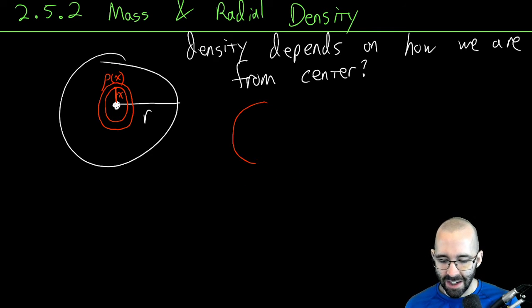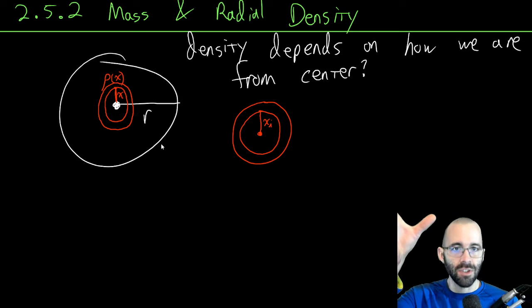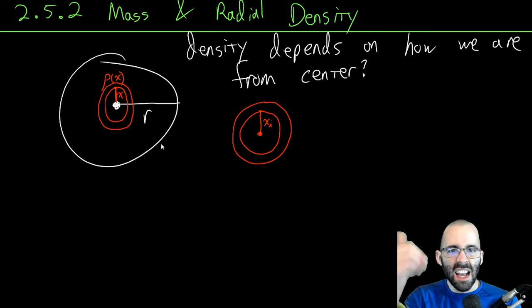What's going to be the mass of that tiny little interval? At any x_i, and we're going to split this into n different washers, at any of those washers we can find the mass.